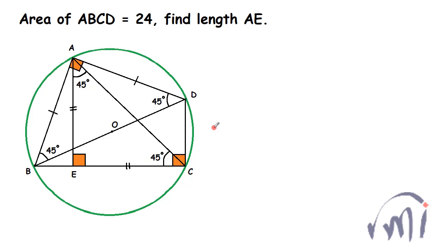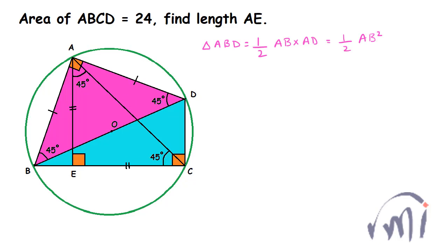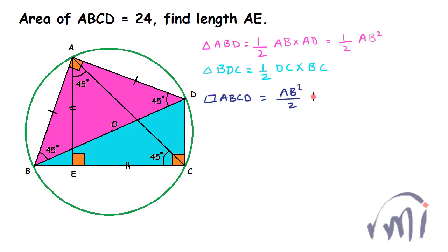So those are our key findings. Now let us find the length AE. The area of the quadrilateral can be found by adding the areas of triangle BAD, which is half times AB times AD. Since AB equals AD, this equals half times AB squared. Adding the area of triangle BCD gives the total area of the quadrilateral ABCD as AB squared divided by 2 plus DC times BC divided by 2.